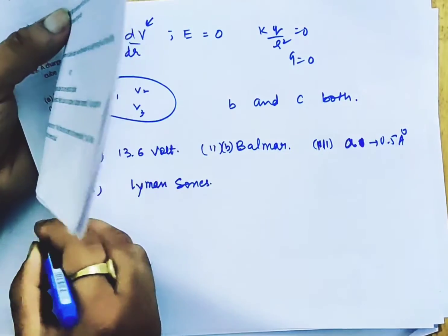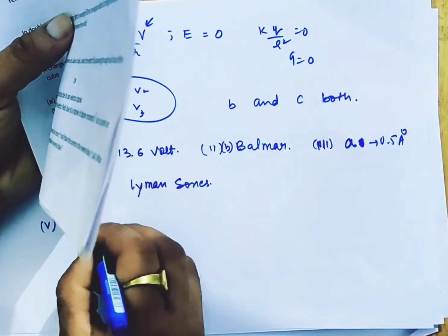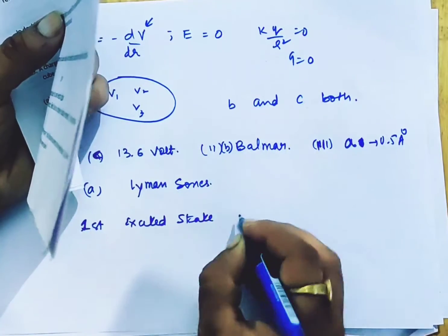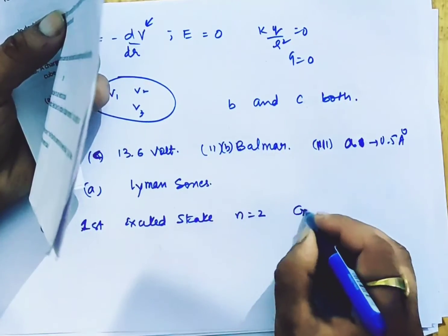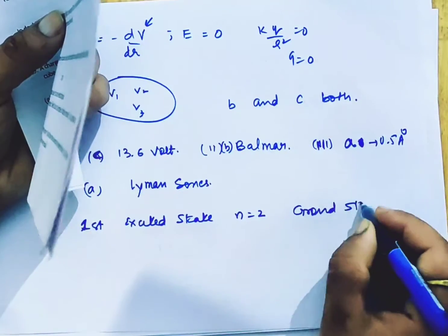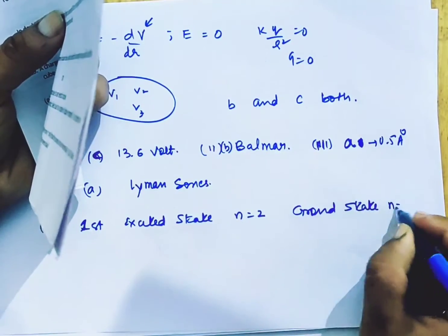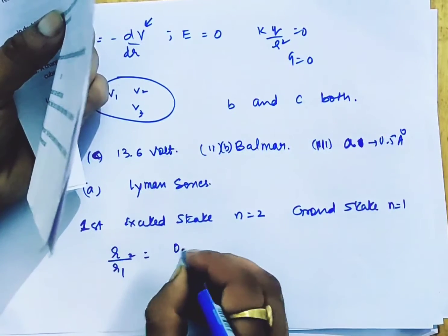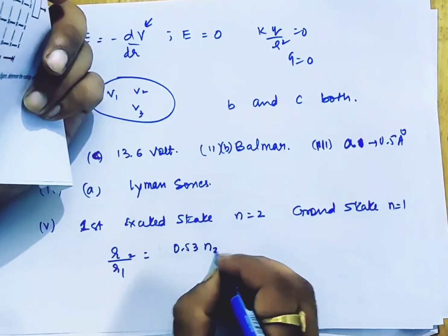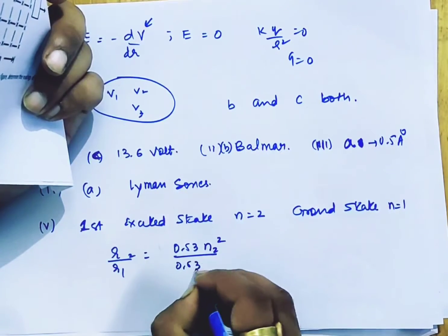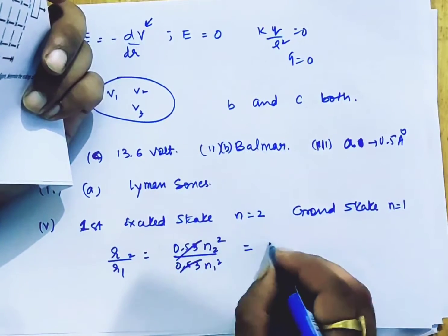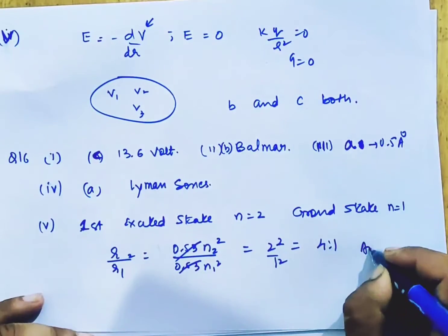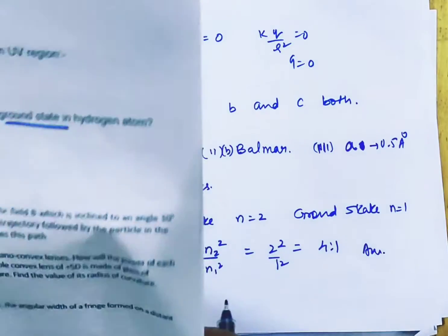Question number 5, first excited state n equal to 2, ground state n equal to 1. Ratio r2 by r1, that is 0.53 n2 square upon 0.53 n1 square. 2 square by 1 square, that is 4 is to 1. That is the answer to the question.